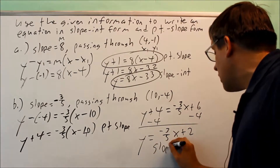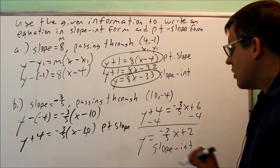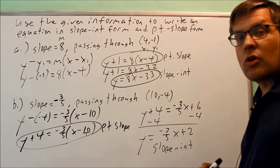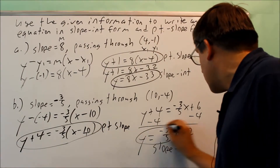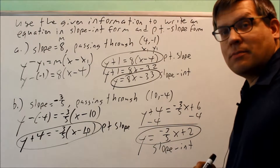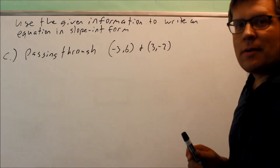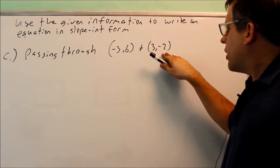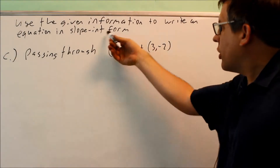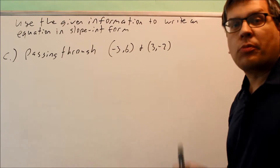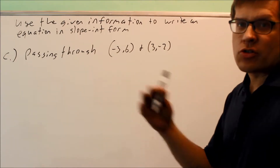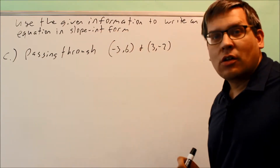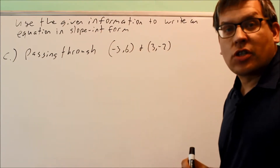That is the slope-intercept form for part B. So the two answers are the point-slope formula and y equals negative 3/5 x plus 2. For part C, we're given two points: negative 3, 6 and 3, negative 2. We only need to find the slope-intercept form, though we'll use point-slope on the way.